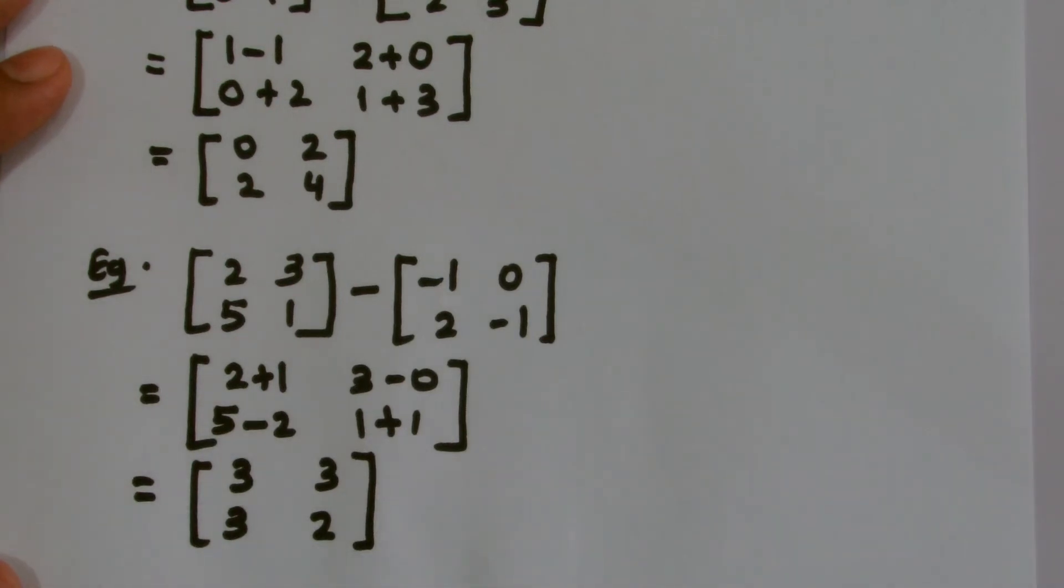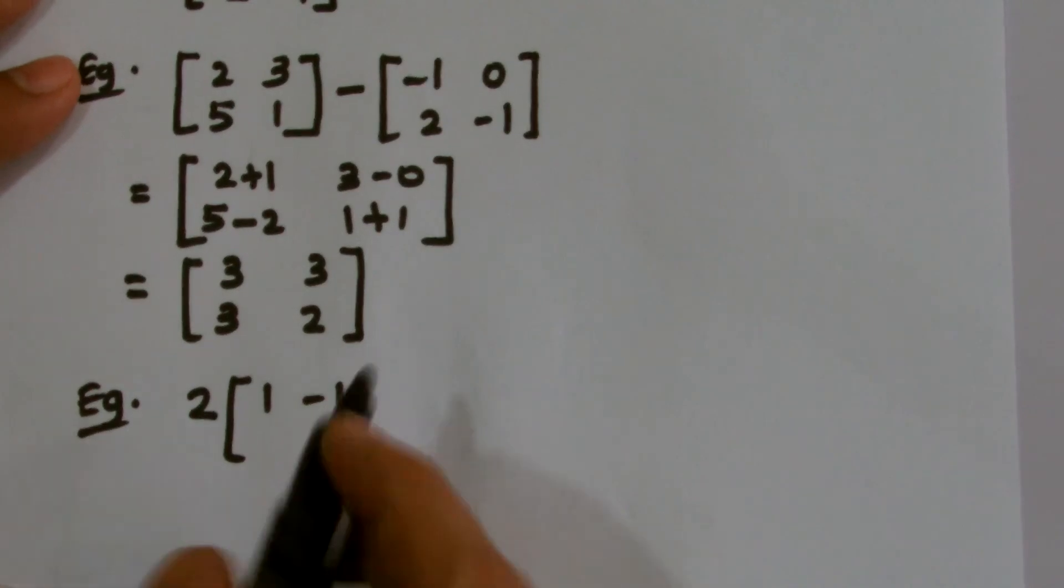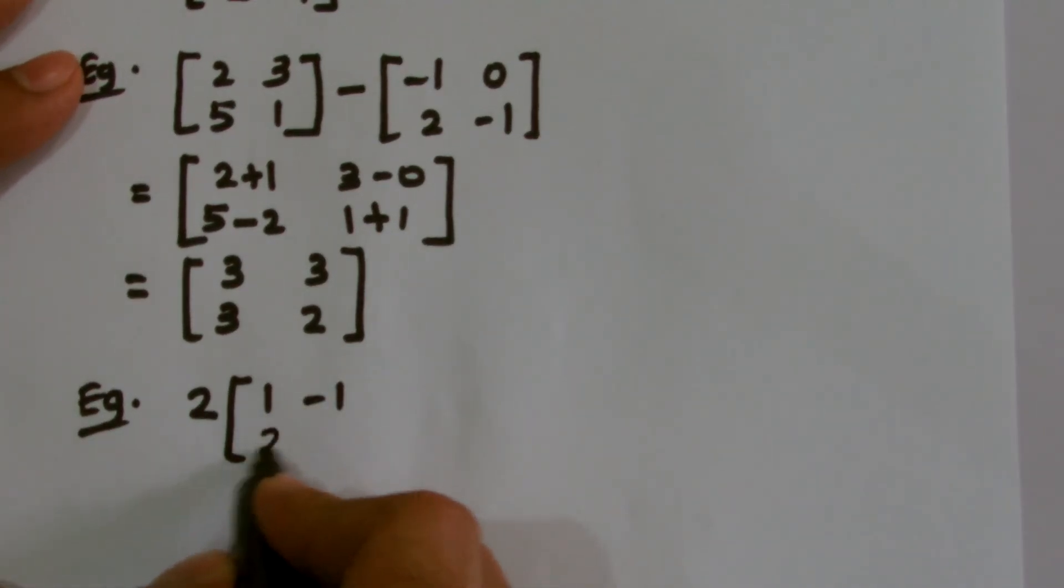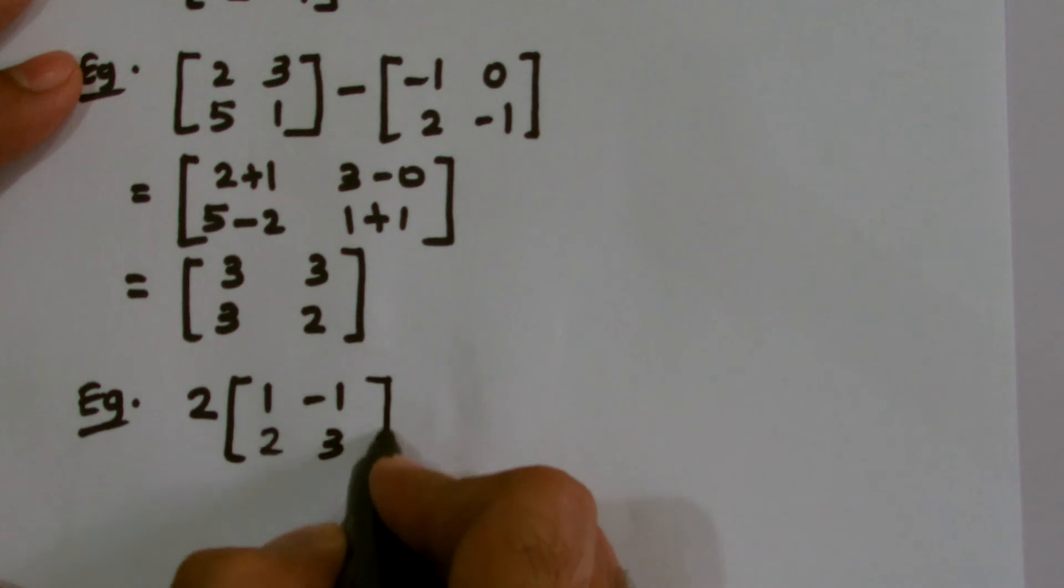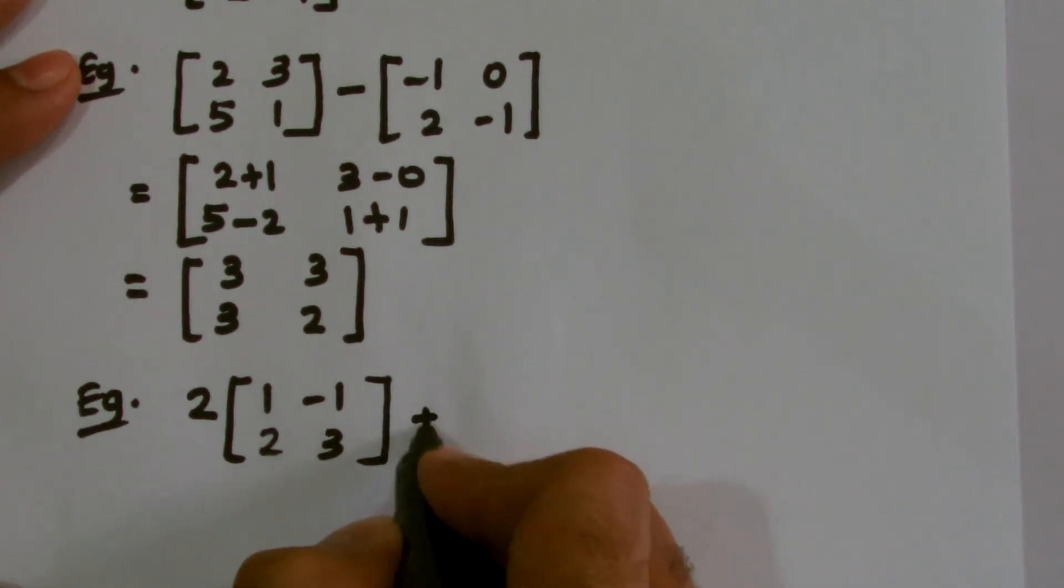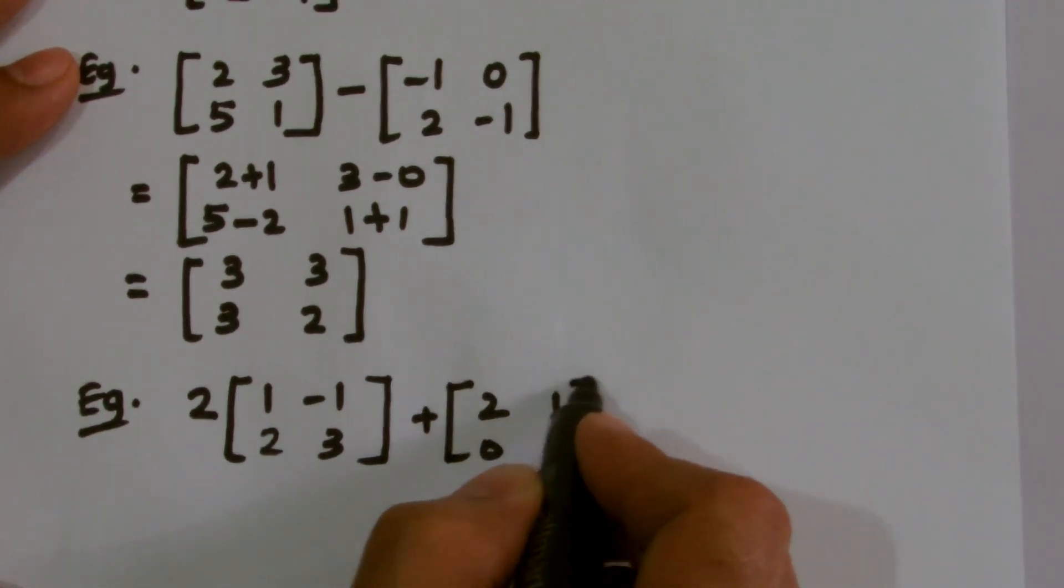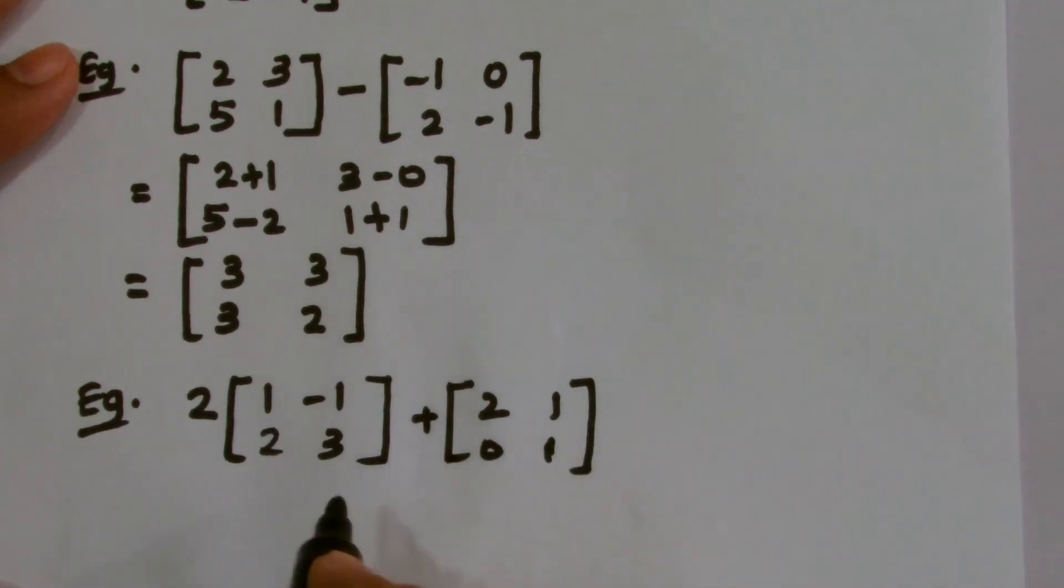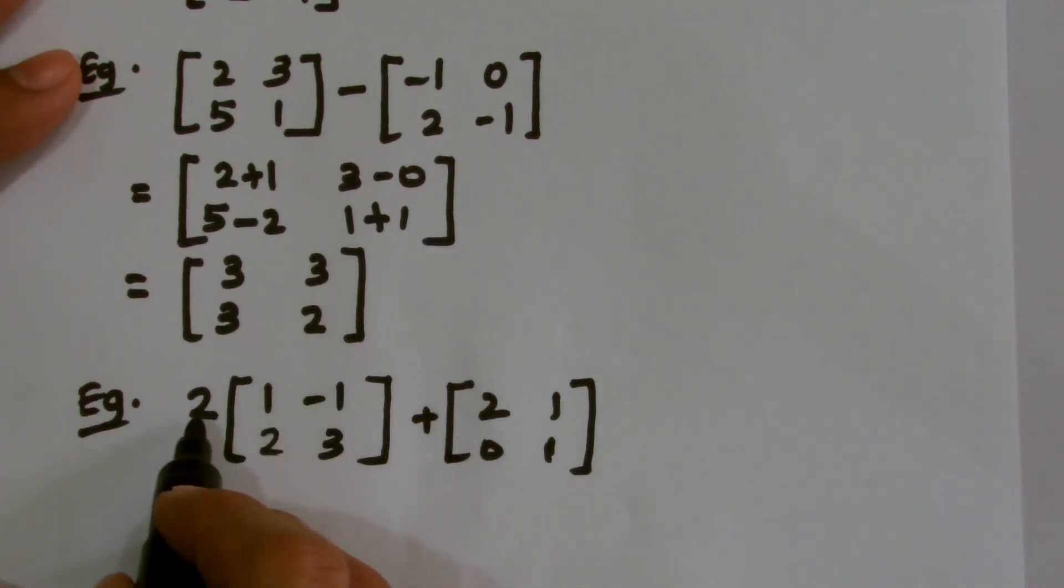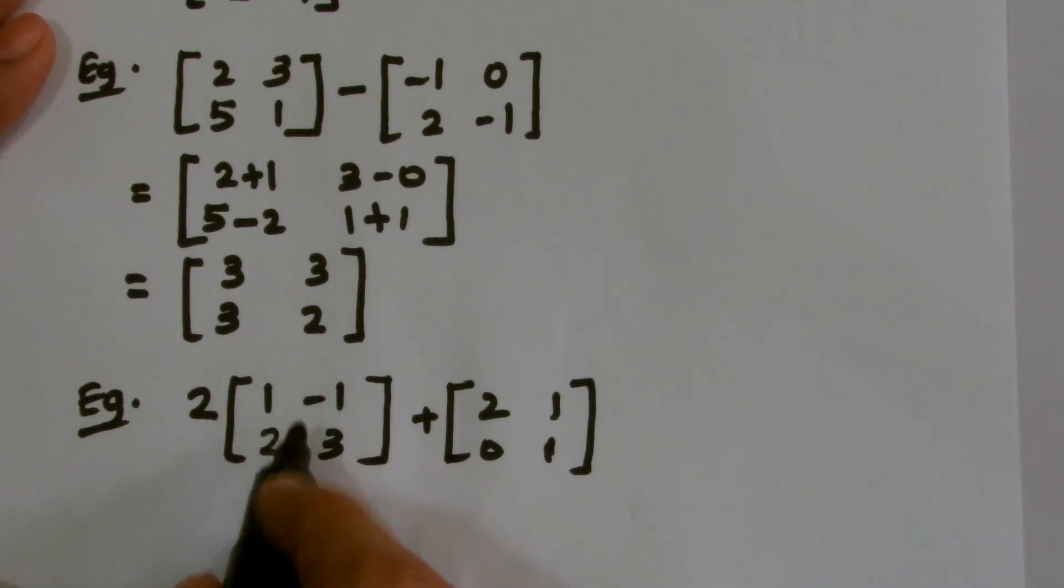Similarly, if I'm looking forward to simplify, for example, I have a matrix like 2 that is to be multiplied with 1, minus 1, 2, 3, add 2, 1, 0, 1. Then first of all, we need to multiply this 2 with all the members. This number outside the matrix will be multiplied with all the numbers inside, all the members inside the matrix.